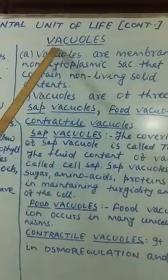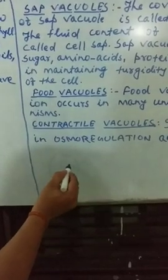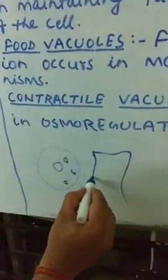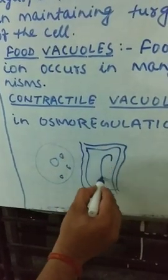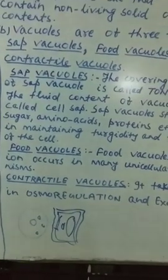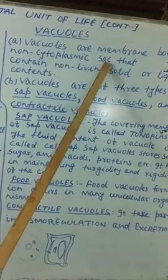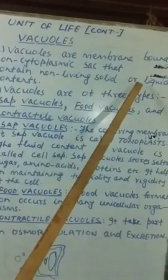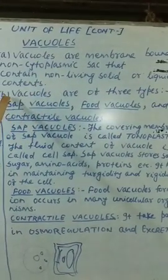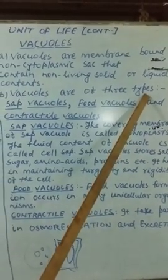Next and last is vacuoles. You have seen in the cell some structures — in the case of animal cells, small vacuoles, and in the case of plant cells, large vacuoles are present. About these vacuoles, we should know their characteristic features. First point: vacuoles are membrane-bound, non-cytoplasmic sacs — pocket-like structures that contain non-living solid or liquid contents. Vacuoles are of three types.